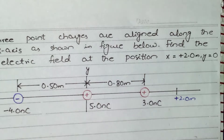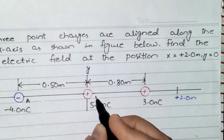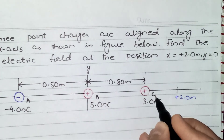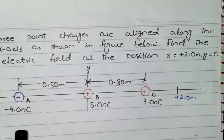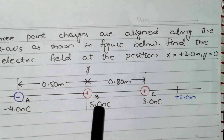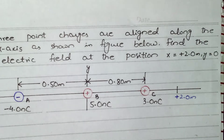For our own convenience, let's mark this charge as A, this charge as B, and this charge as C. We need to find out the electric field for all three charges. The formula for electric field is E = kq over r squared.